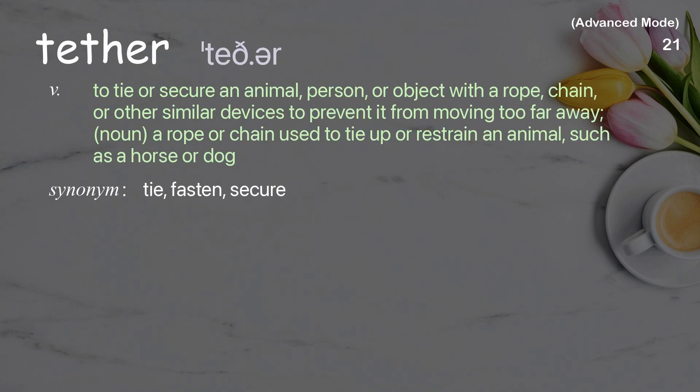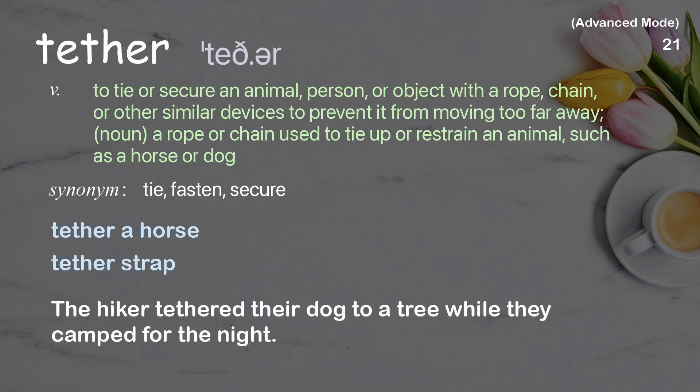Tether: to tie or secure an animal, person, or object with a rope, chain, or other similar devices, to prevent it from moving too far away. As a noun: a rope or chain used to tie up or restrain an animal, such as a horse or dog. Examples: tether a horse; tether strap. The hiker tethered their dog to a tree while they camped for the night.